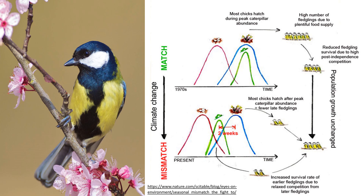In some cases, species and trophic mismatch will not always result in population declines. An example of this is in the Netherlands with the great tit, which also follows the emergence and peak abundance of the caterpillar. As mentioned, the caterpillar's peak abundance is becoming earlier in the year due to warmer temperatures and has advanced at more than twice the rate of the great tit laying dates, according to scientists at the Netherlands Institute of Ecology.